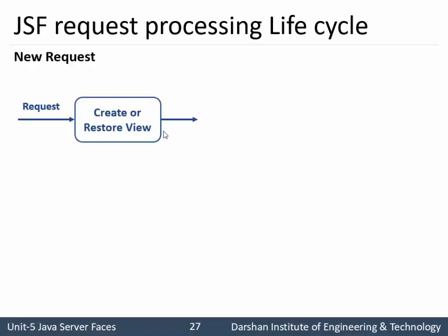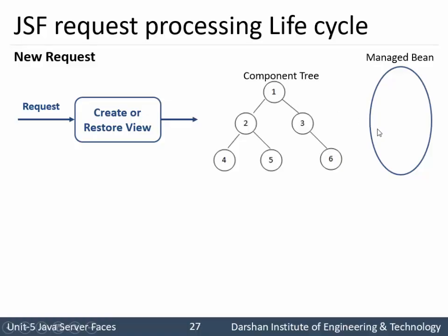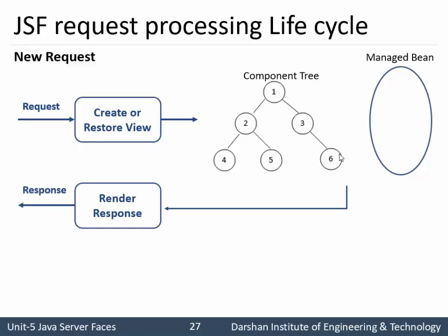For a new request, there is no ready-made component tree available. When a new request comes from the client, it goes to Restore View where the view is created, then a component tree is designed. The component tree either sets values to the managed bean or retrieves values from it - for example, if a user ticked a checkbox, that value is submitted to the managed bean; if another component needs that value, it is retrieved from the managed bean. For a new request, there are no intermediate processing steps and the response is given directly to the client.